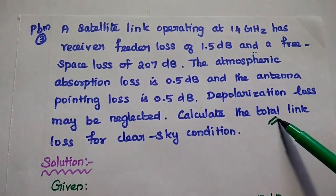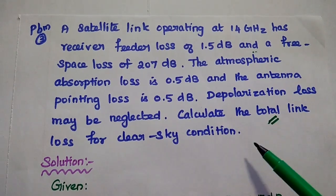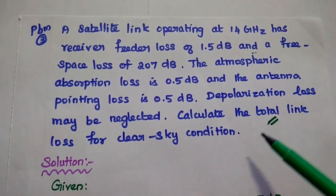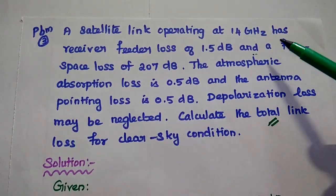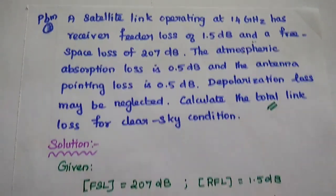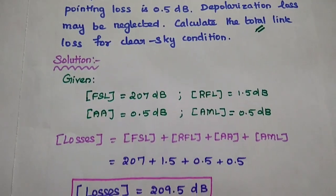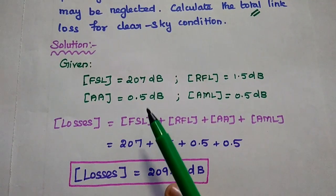Here we are going to find out the total link loss for clear sky condition. For that we have to add all the losses together. It is very simple. In the solution we have to write the given data first.